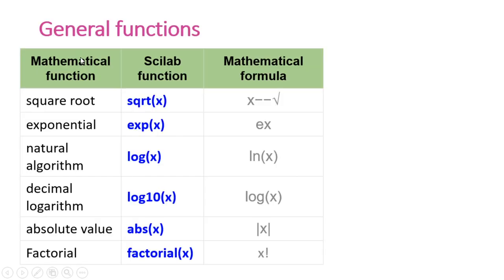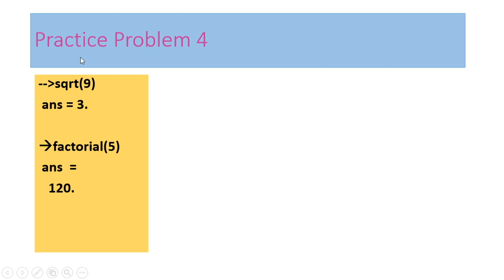Scilab provides many built-in mathematical functions. Use sqrt(x) for square root, exp(x) for exponential, log(x) for natural logarithm, log10(x) for decimal logarithm, abs(x) for absolute value, and factorial(x) for factorial. For example, sqrt(9) returns 3, and factorial(5) returns 120. Since no output variable is defined, results are stored in ans by default.